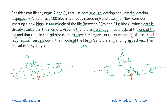First, let's distinguish between contiguous and linked allocation. In contiguous allocation, all blocks are stored contiguously in memory one after another. This enables random access — we can directly jump to the 50th block. Since the file control blocks are already in memory, we can directly jump to the location after block 50 where we need to insert the new block.